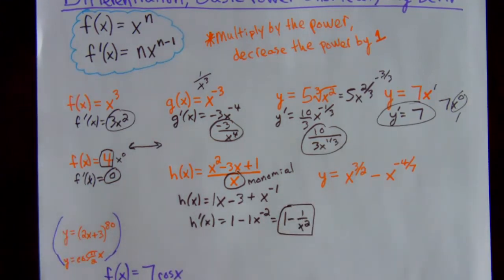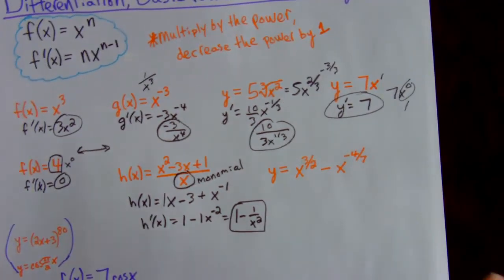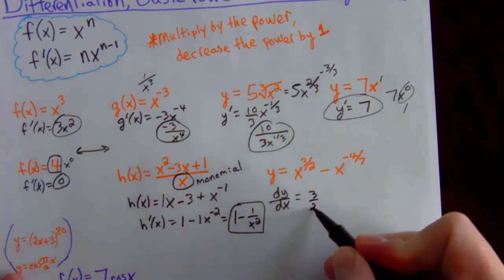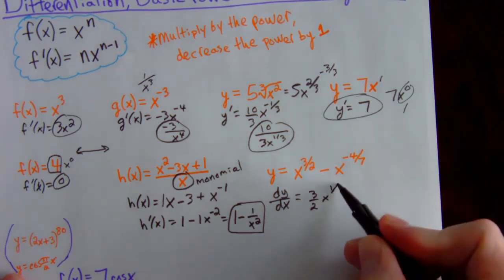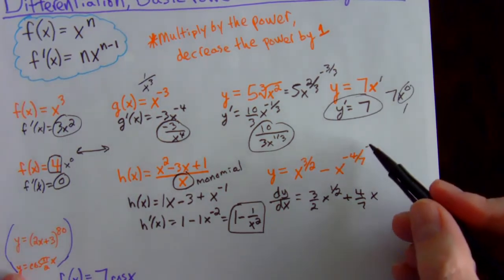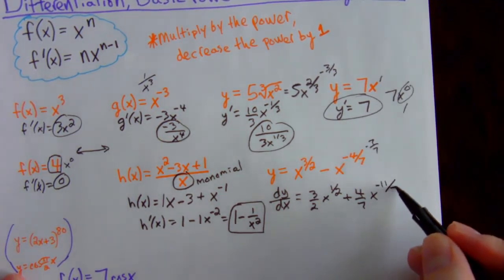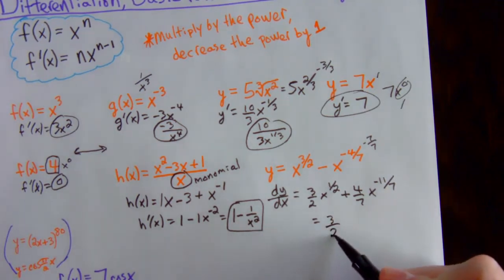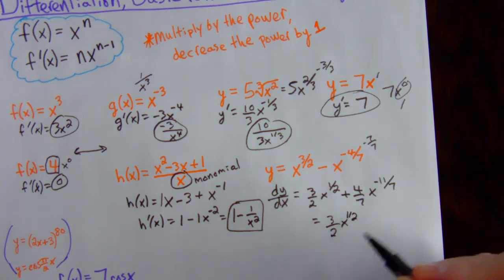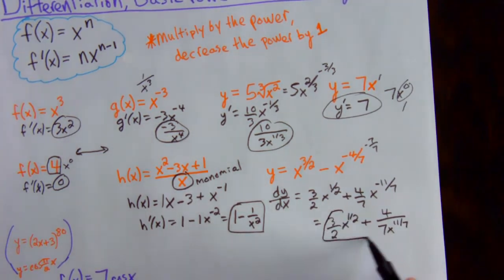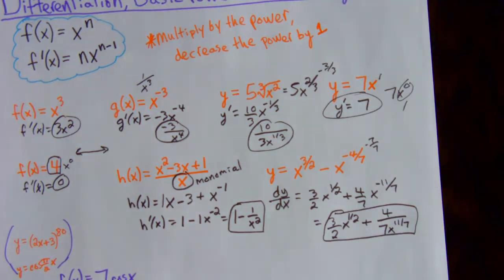In a future chapter we'll get a single fraction with a common denominator, but right now this is fine. With fractional exponents, use dy/dx notation and multiply by the power, then decrease that power by 1 — like subtracting 2 over 2 to get 1 over 2. For a negative exponent, negative times negative is positive; multiply by the power and decrease it, like subtracting 7 over 7 to get negative 11 over 7. For now, just get automatic with your power rule shortcut — practice these until they're fast and easy.